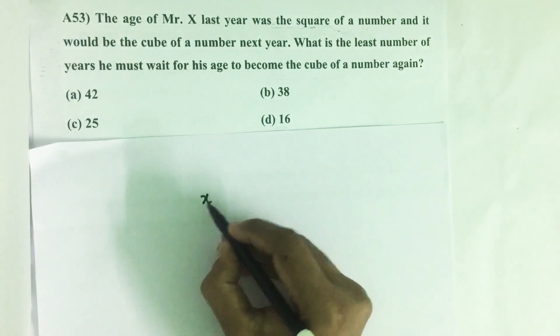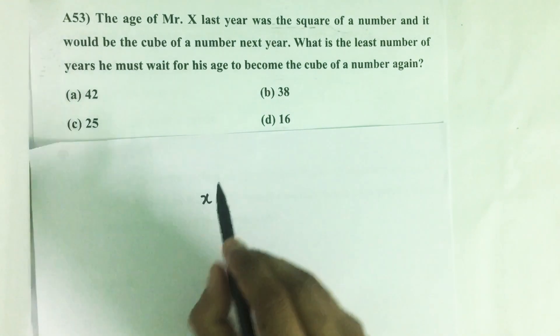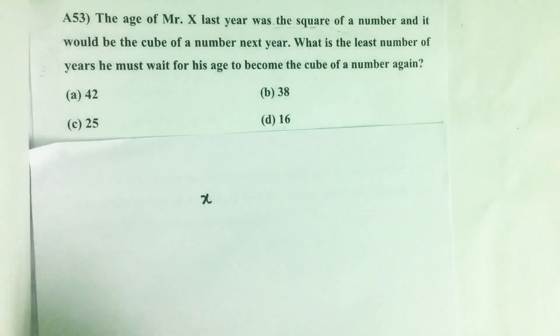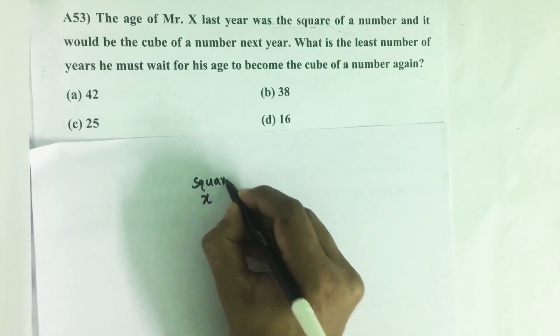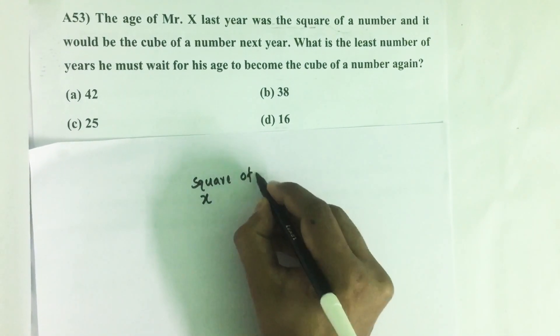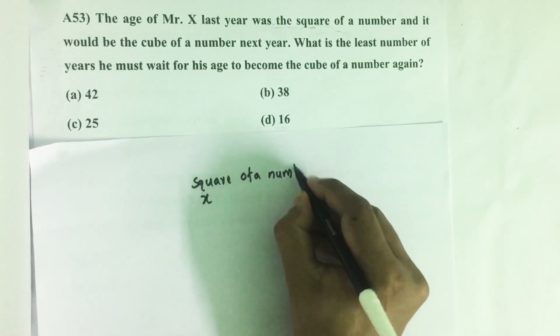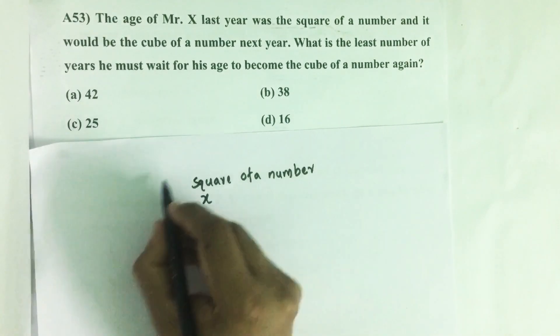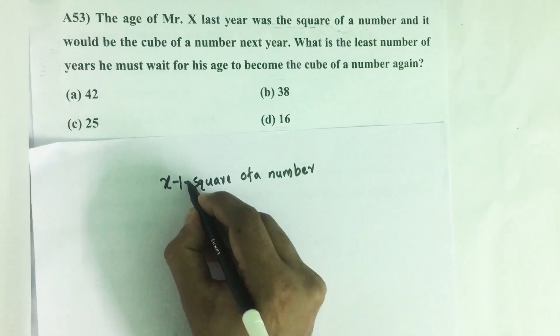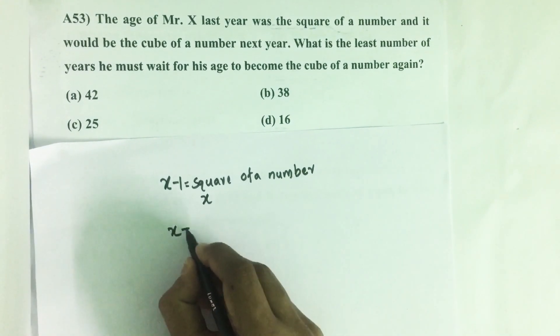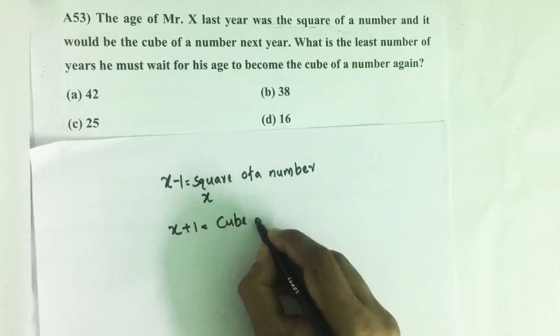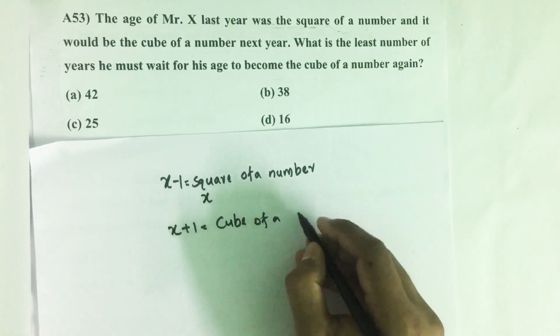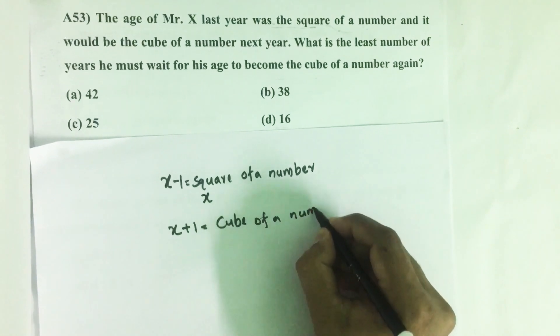So here, Mr. X's present age equals x. Last year it was the square of a number, so x minus 1 equals a square. Next year, x plus 1, equals the cube of a number.